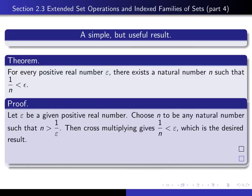And now there exists a natural number such that something happens. So I have to tell you how to choose my natural number n. And so I just simply say, choose n to be any natural number that's bigger than 1 over epsilon.